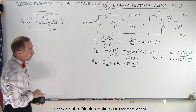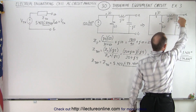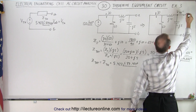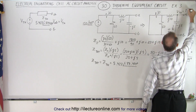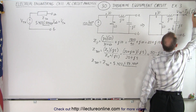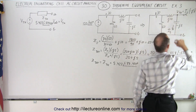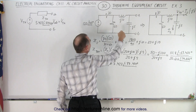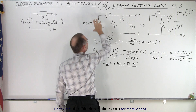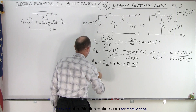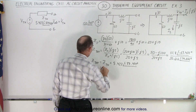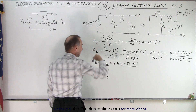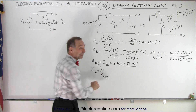Now we need the Thevenin voltage. The Thevenin voltage can be found by finding the current through the capacitor and multiplying that times the impedance of the capacitor — so V_Thevenin equals I2 times minus j5. To find I2 we first need the total current, which means we need the impedance as seen from the source, not from terminals AB.